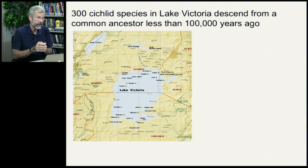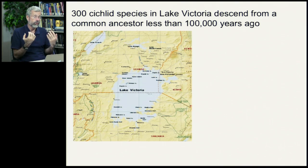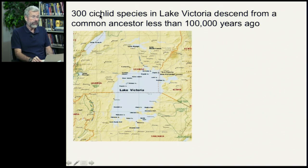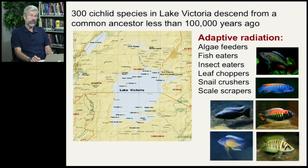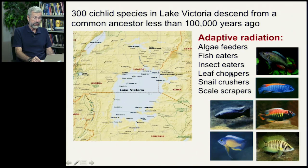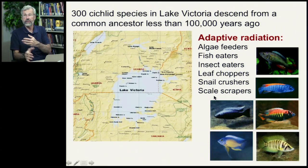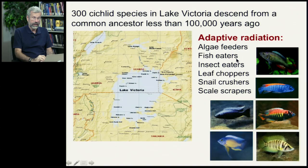One of the most remarkable cases of adaptive radiation involves cichlid fish in Lake Victoria, the largest lake in Africa. There are 300 different species descended from a common ancestor less than 100,000 years ago. Fish entered this basin from a river when the lake level rose high enough to connect. With a whole new set of fantastic habitats available, there has been remarkable adaptive radiation: species now specialize on algae, fish, insects, leaves, hard-shelled prey — and even the scale scrapers that bite chunks from larger fish. All of these have appeared within Lake Victoria in just the last 100,000 years.